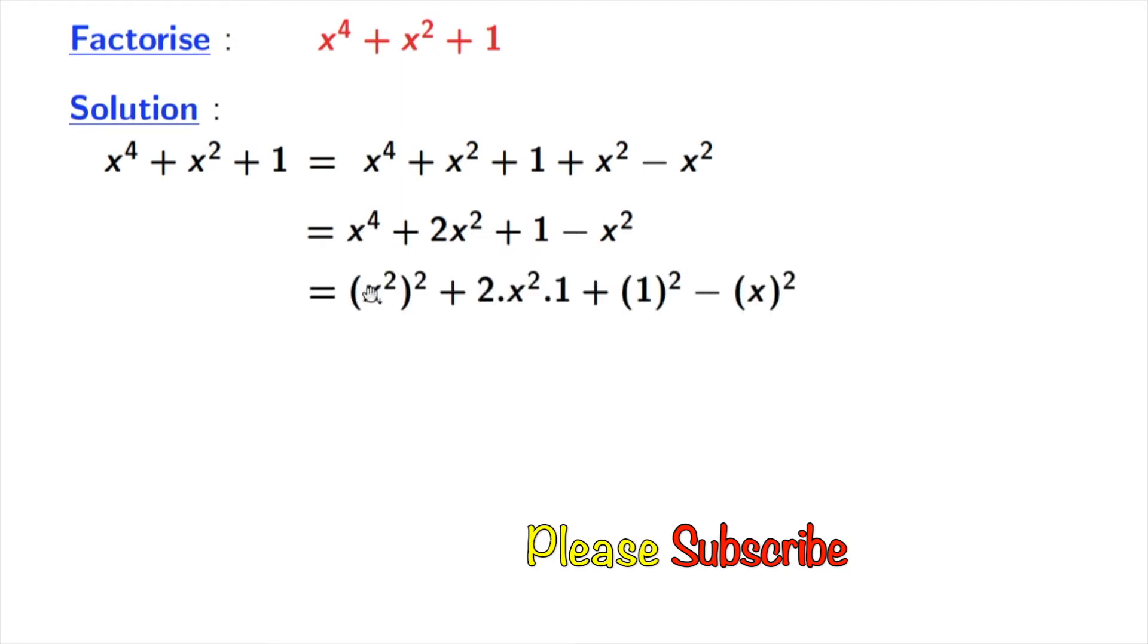x^4 as (x^2)^2, 2x^2 as 2 times x^2 times 1, 1 as 1^2, x^2 as (x)^2. Now look that this is in the form of a^2 + 2ab + b^2, where a is x^2 and b is 1.